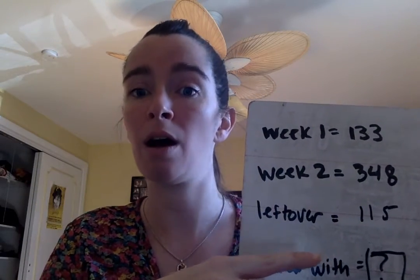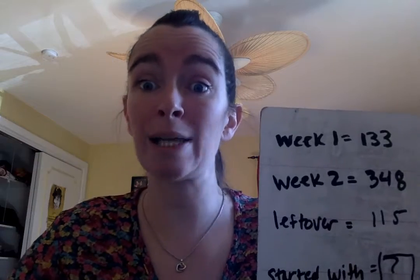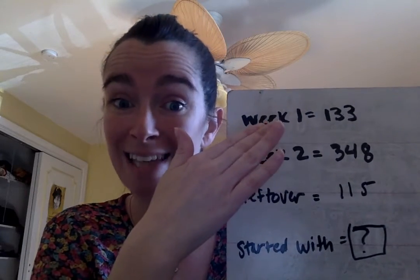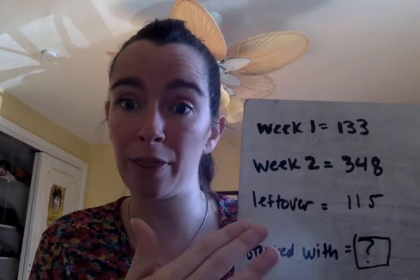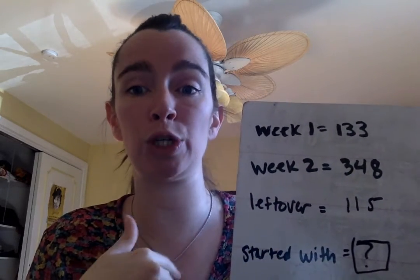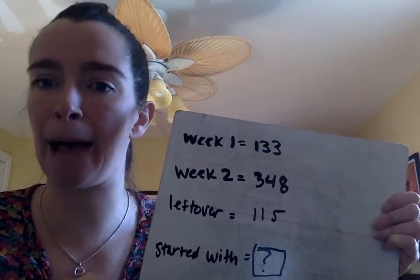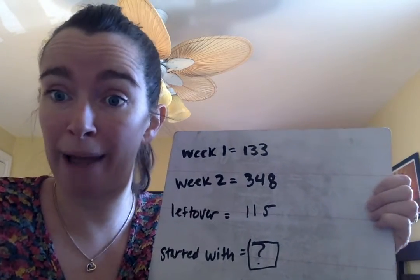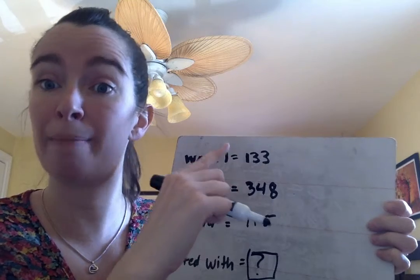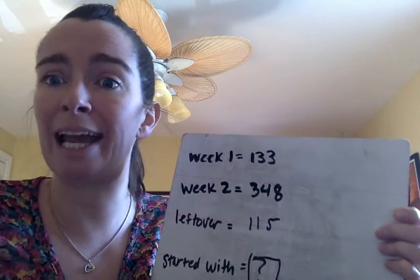Do you think our answer is going to be a large number or a small number? It's going to be pretty large, right? Because I want to know at the very beginning, before he passed these out, and even though now he has some left over, how many did he begin with? So the operation I'm going to choose is adding. I like adding just two numbers at a time — I don't like adding all three at once, it gets my brain a little confused. So I'm going to take 133, my week one, plus week two, 348, and figure out how many did Angel already give out.